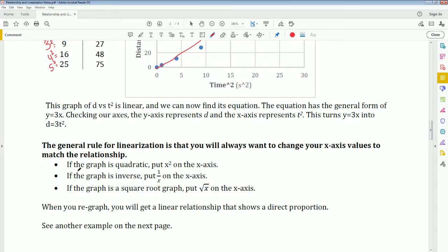There are general rules for linearization that will always get you to change the x axis to match the relationship. If it is a quadratic, which will look something like this or this, you want to put x squared on the x axis. So you're going to square the x values. But if it looks like an inverse like this, where it decays, you want to put 1 over x on the x axis.